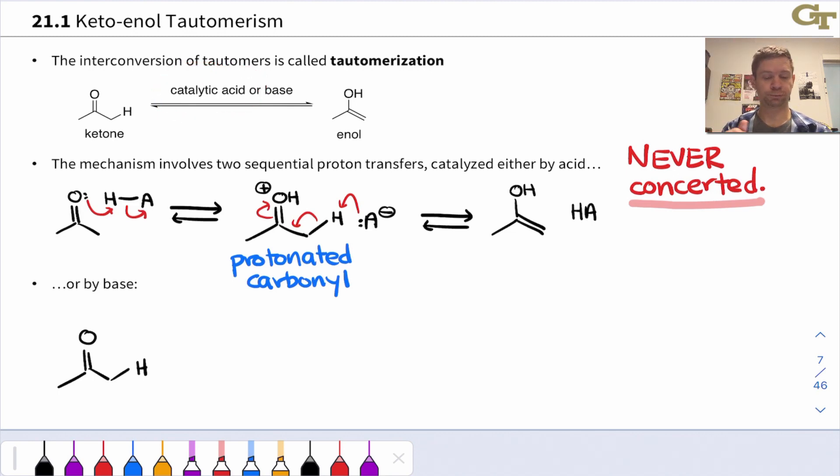So here it's two proton transfers. Proton goes on the carbonyl oxygen first, and proton comes off the alpha carbon next. Under base catalysis, the order of events is reversed, but two proton transfers are still involved.